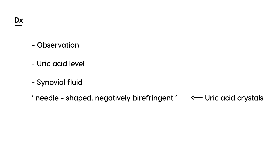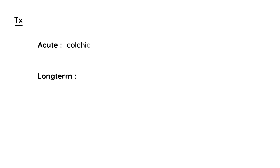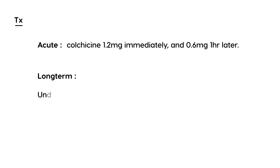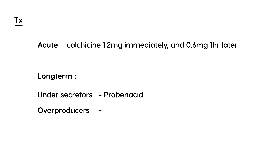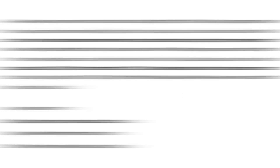For treatment, there's acute management and long-term management. For acute gout, the most common treatment is colchicine — you give 1.2 milligrams immediately, then 0.6 milligrams one hour later. For long-term management, under-secretors are treated with probenecid, while over-producers are treated with allopurinol.